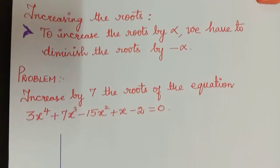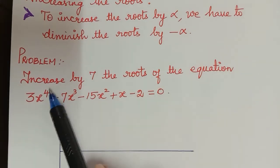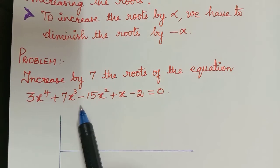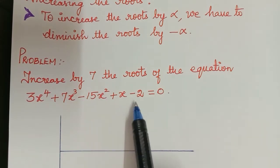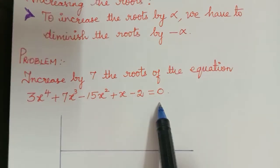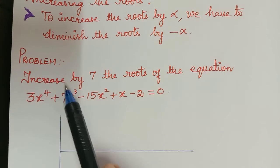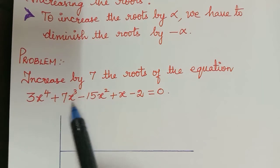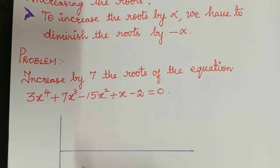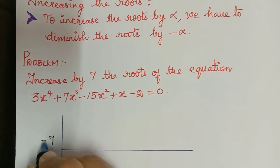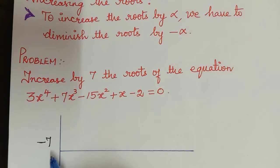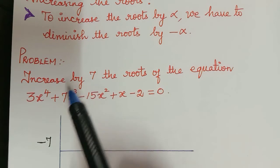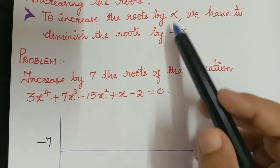Now we will see a problem on it. In this problem they are asking us to increase by 7 the roots of the equation 3x to the power 4 plus 7x cubed minus 15x squared plus x minus 2 equals 0. Doing so is the same as diminishing the roots of this equation by negative 7, so we will follow the same procedure as in our previous video.